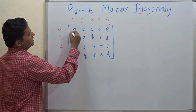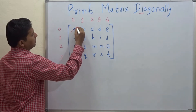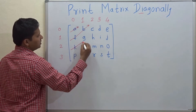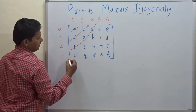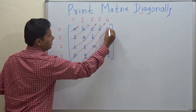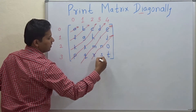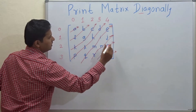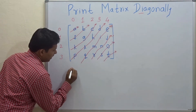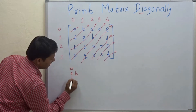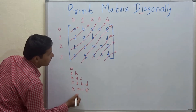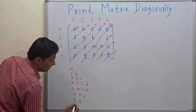Here, A is the first diagonal, then FB, then KGC, then PLHD, then QMIE, then RNJ, then SO and T. So let's write all the diagonals: A, then FB, KGC, PLHD, QMIE, RNJ, SO and T.